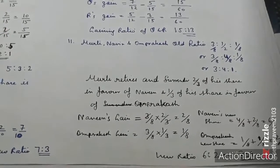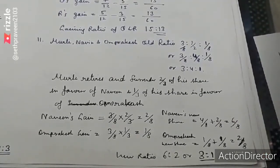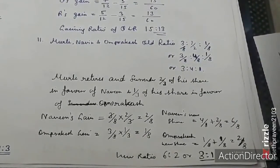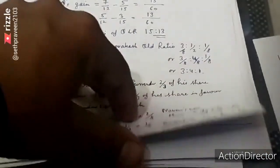Now if you want to find the new share, Naveen has gained in his share and Umprakash has gained in his share. Adding to previous shares, the ratio is 6 is to 2 or 3 is to 1. So question number 11 is complete.